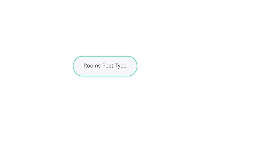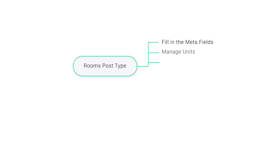First we're going to need to create the post type which will contain all of the items available for booking. In my example I'm using a rooms post type, so my items will be rooms. Then we're going to add all the needed meta fields, all of the features our items will have, and all of the units if you're planning on having multiple units of these items. You'll also need to create listings so you can later display these items on the archive pages.